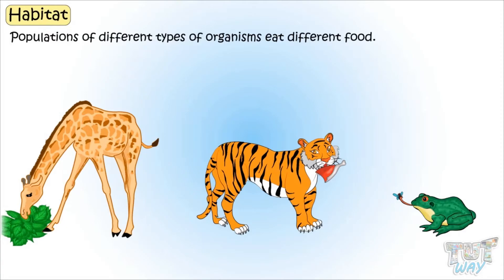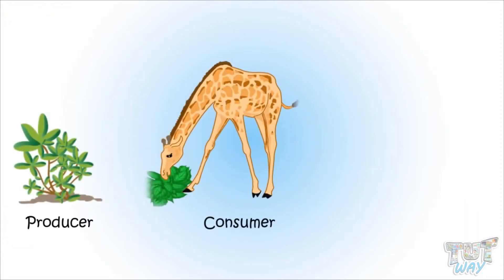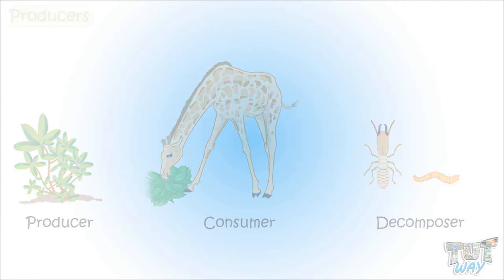First of all, let's see what are producers, consumers, and decomposers in a habitat. Producers.